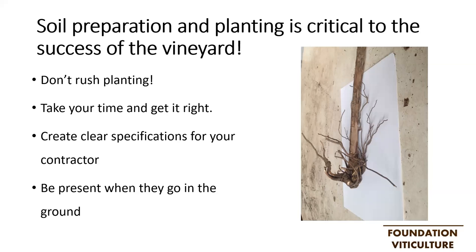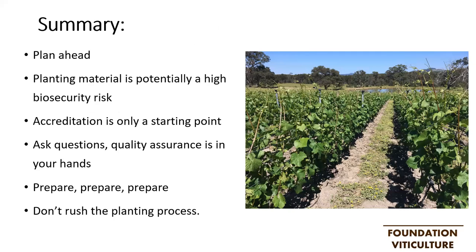In summary: plan ahead and order at least 18 months in advance of planting. Remember that bringing planting material onto your property is a high biosecurity risk, so manage the risk. Remember that accreditation is only a starting point — develop a relationship with your nursery, ask questions and make quality assurance your responsibility. You can't do enough preparation, whether that's in the decision-making process or in preparing your vineyard. And finally, don't rush planting — the vines will be there for hopefully the next 50 years, so take your time and get it right.